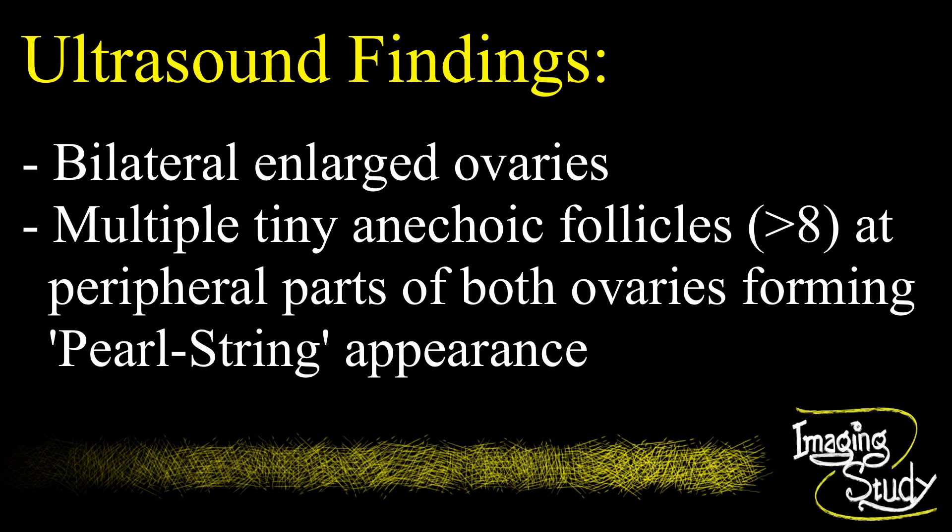On ultrasound, the ovaries are enlarged bilaterally. Multiple tiny anechoic cystic follicles are noted at the peripheral parts of both ovaries, forming a typical pearl string appearance.